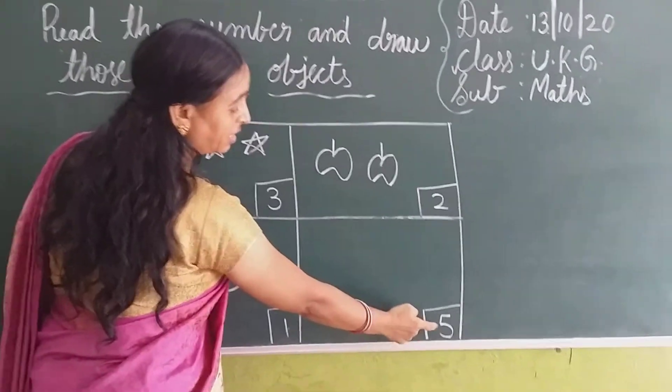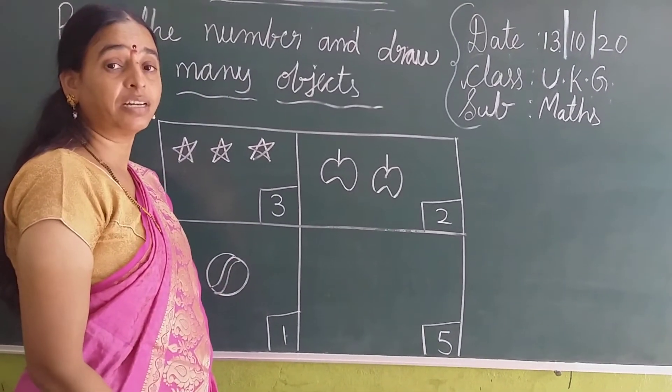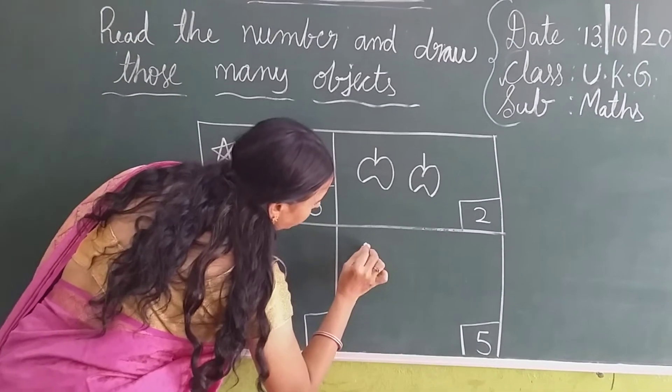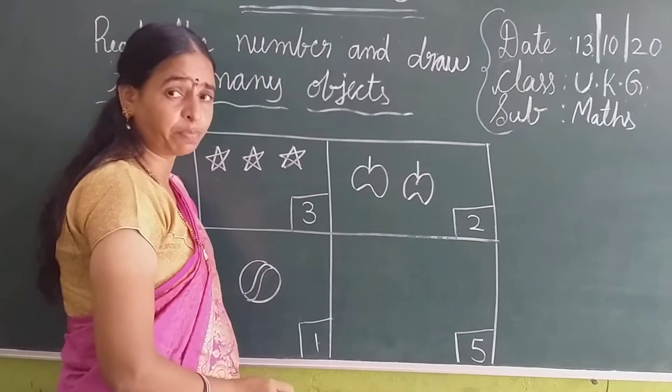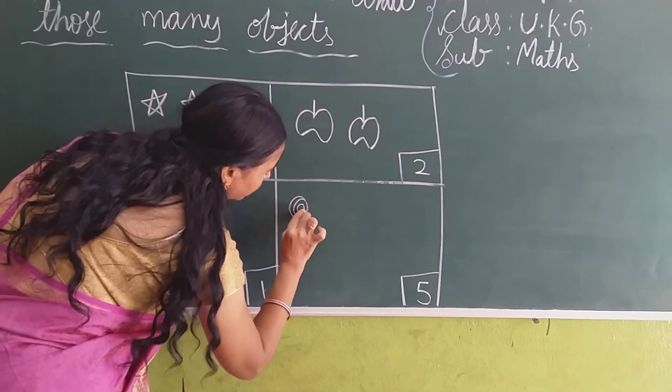Which number is this? 5. We have to draw how many objects? 5 objects. What are you doing here? Do you like lollipops? Yes. Now look at here. Draw the lollipops like this.